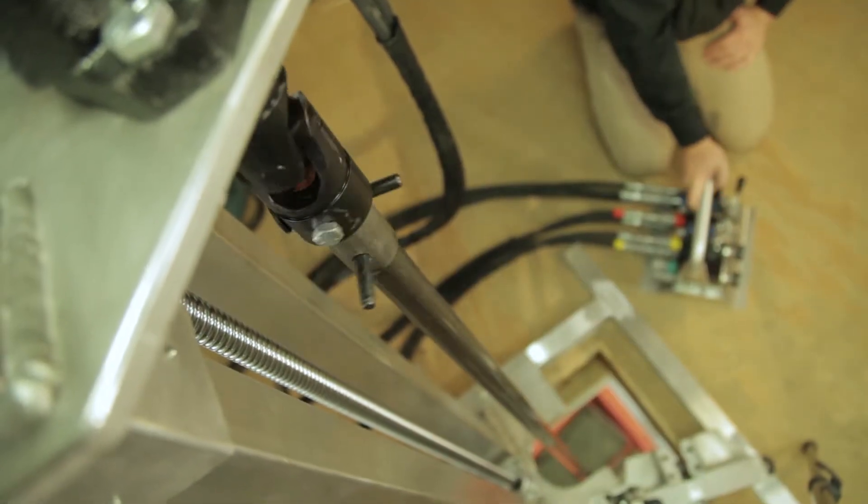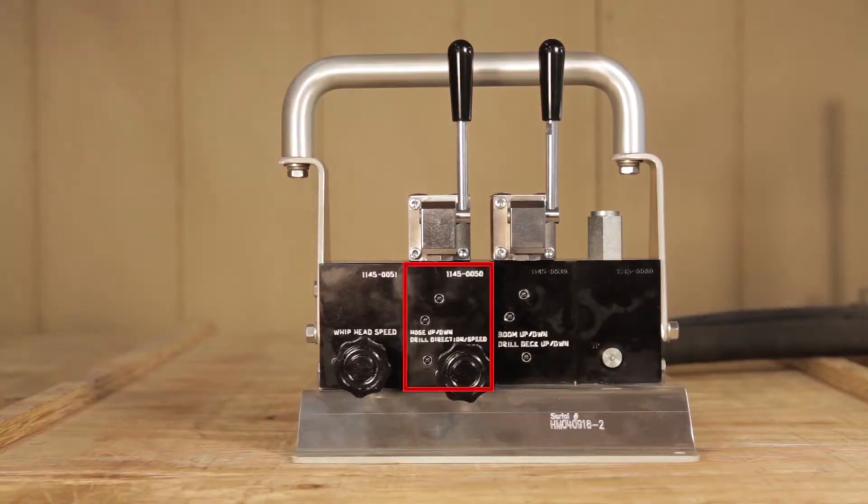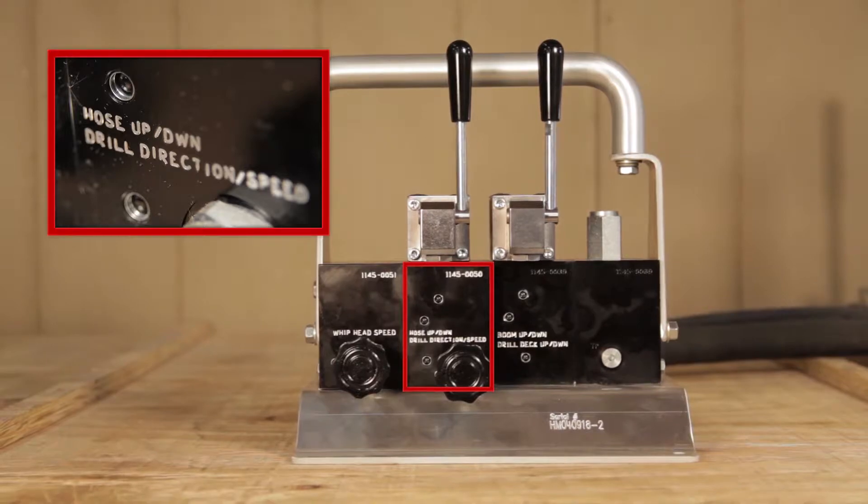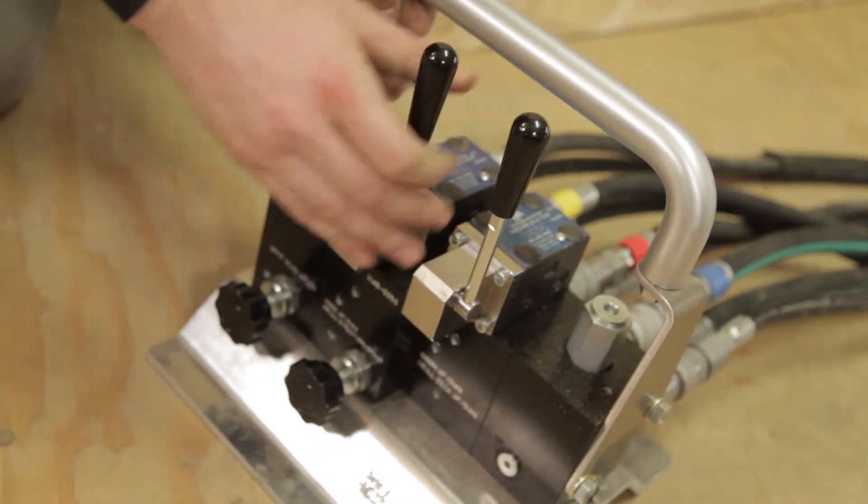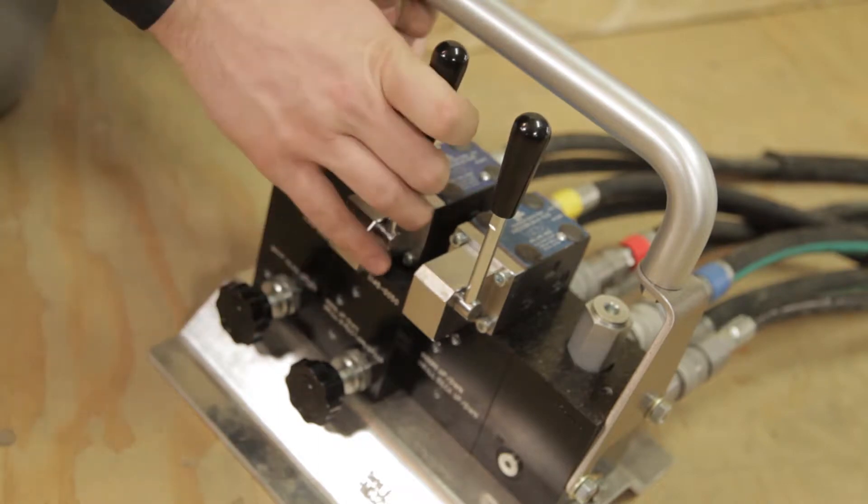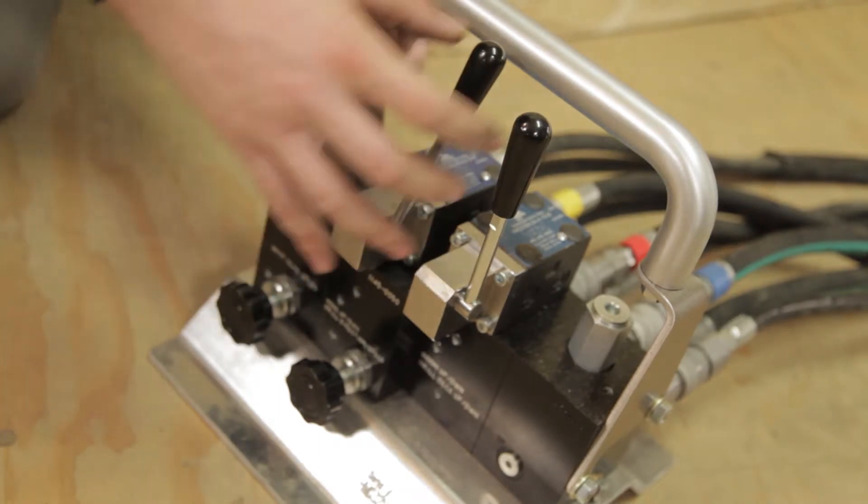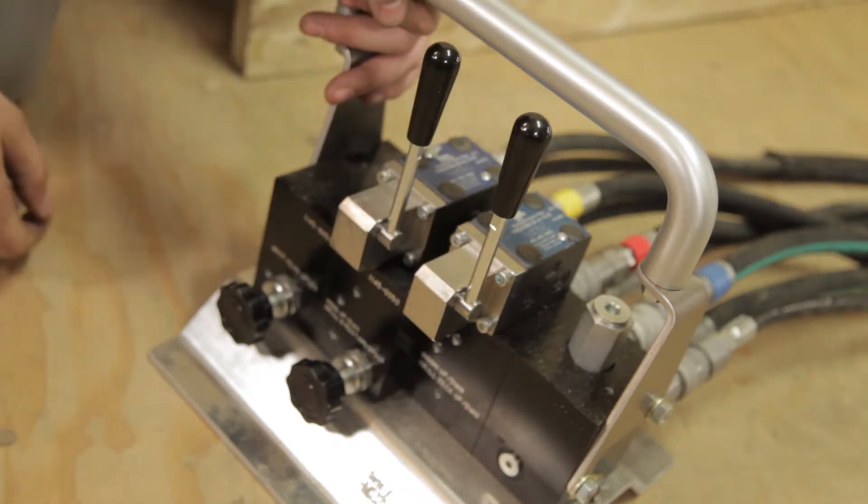The clockwise and counterclockwise rotation of the drill assembly is controlled by the valve block labeled drill direction speed control. This is a detented directional valve, meaning it will remain in the position it is placed until manually returned to the neutral middle position.